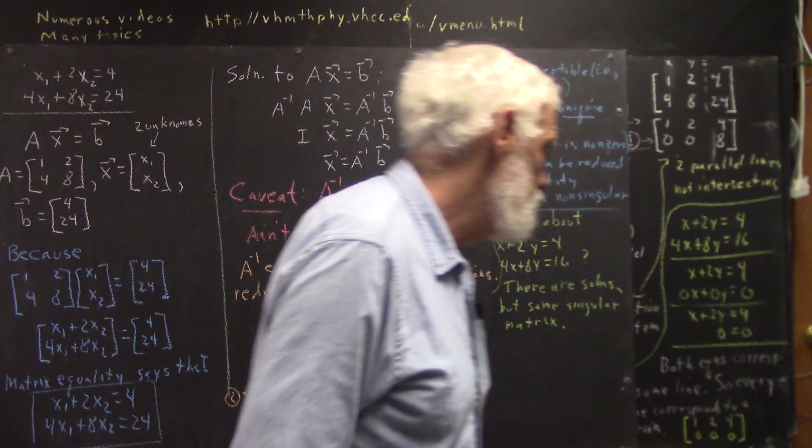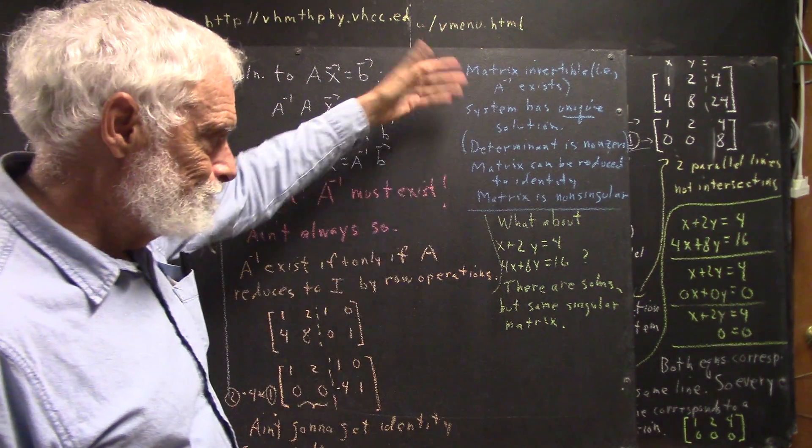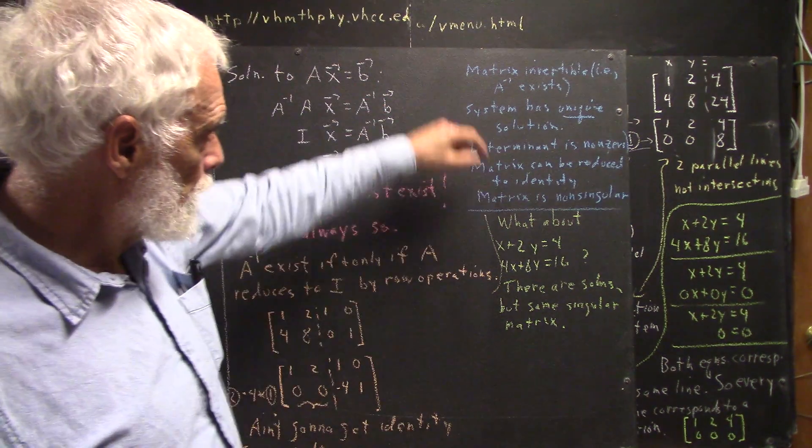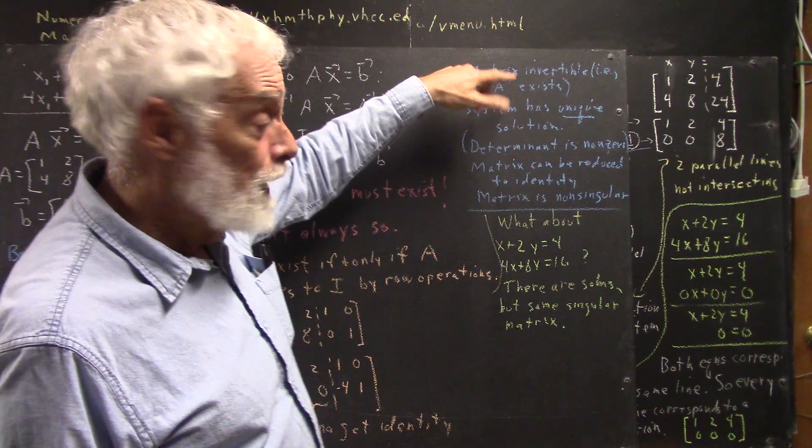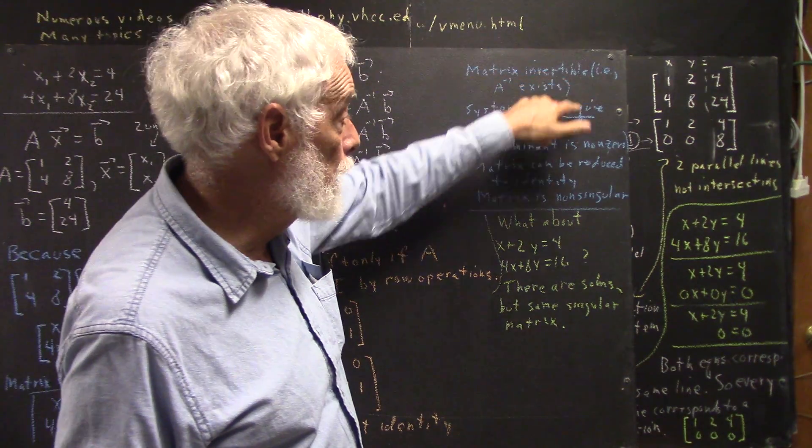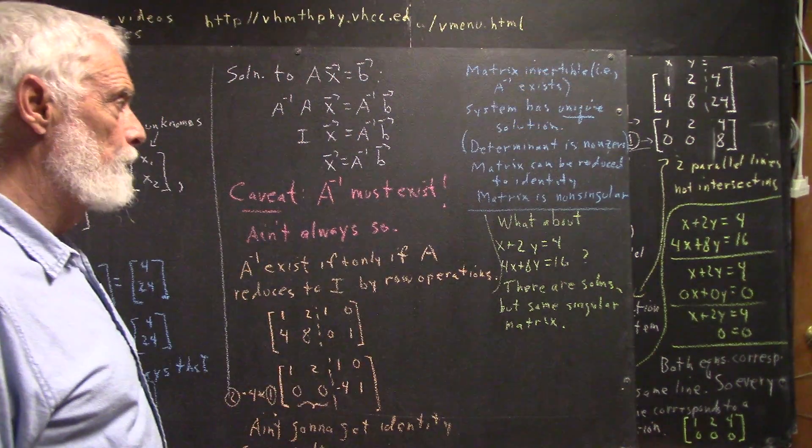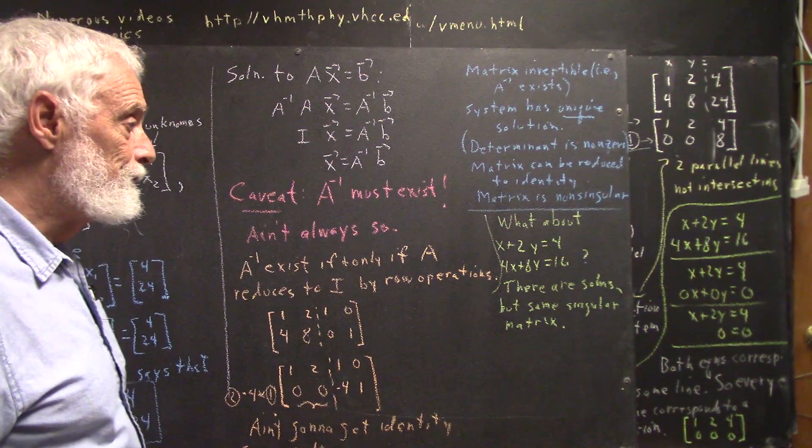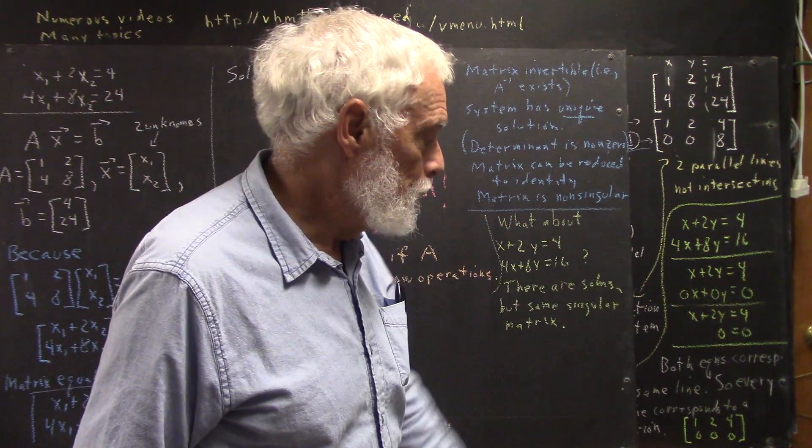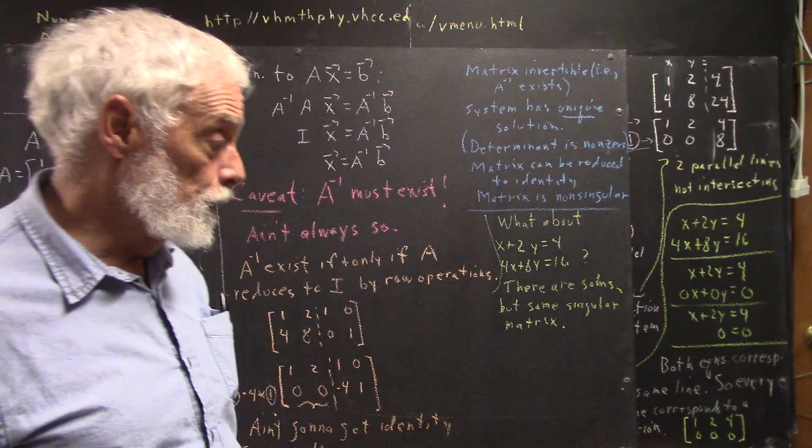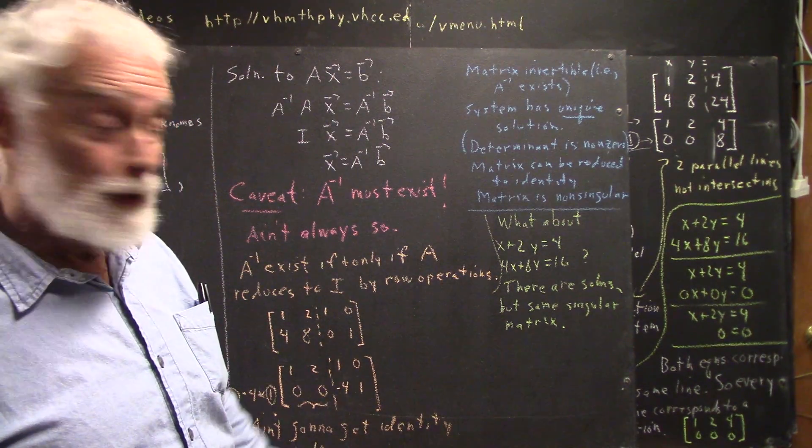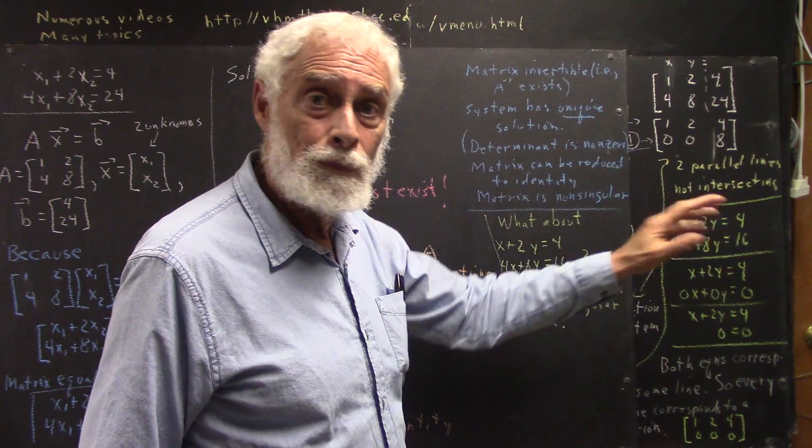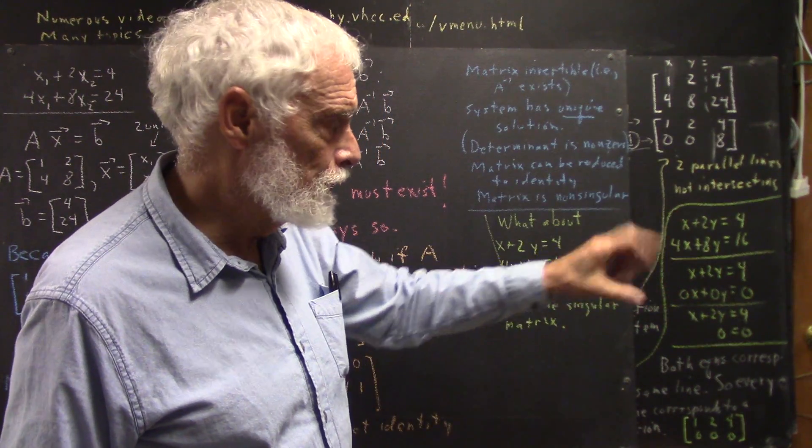So, what does that do to what we've said here? Well, when I said the system has a solution, I said the system has a unique solution. You can't use the inverse matrix to solve the system in this case, because there is no inverse matrix. But that doesn't mean the system can't involve two identical forms of the same equation.